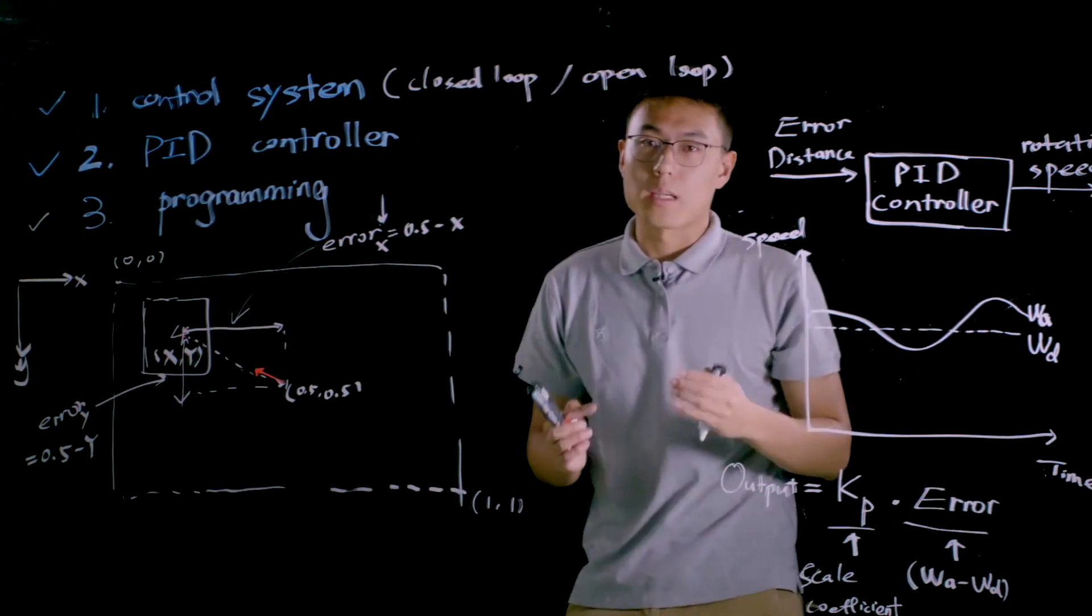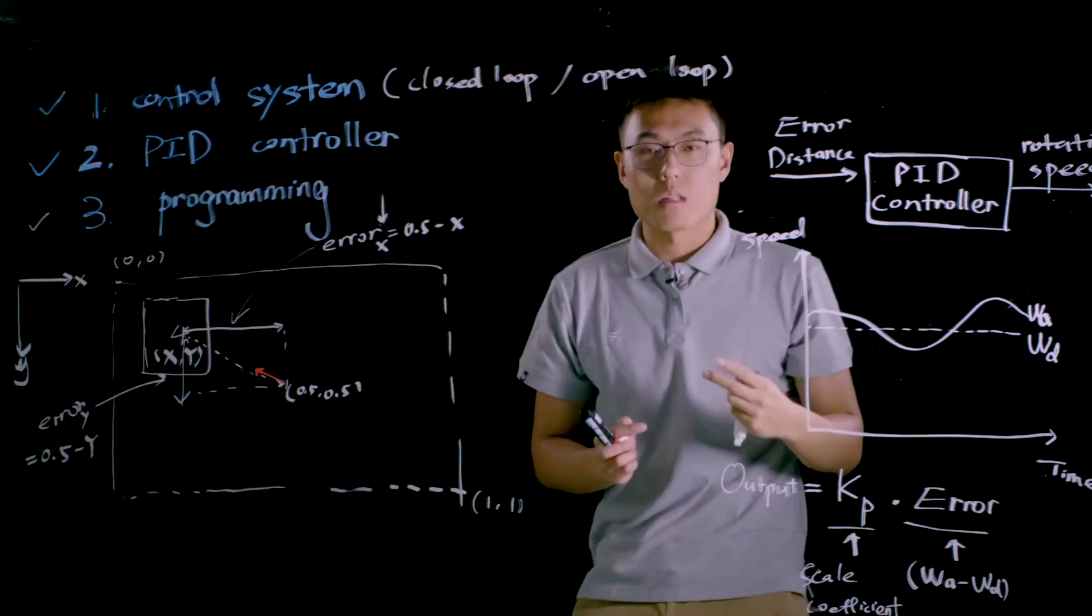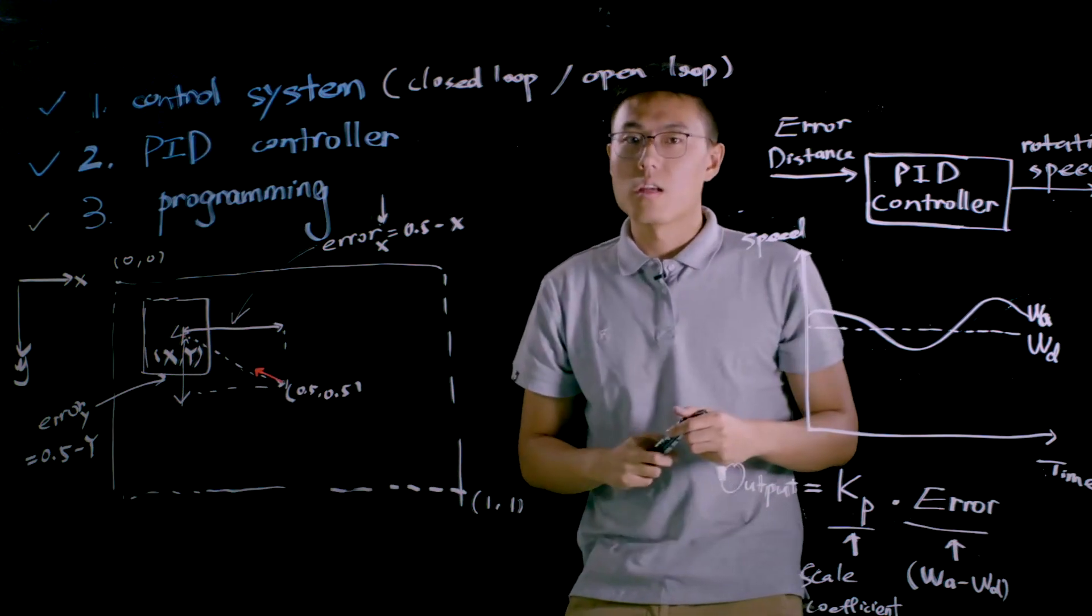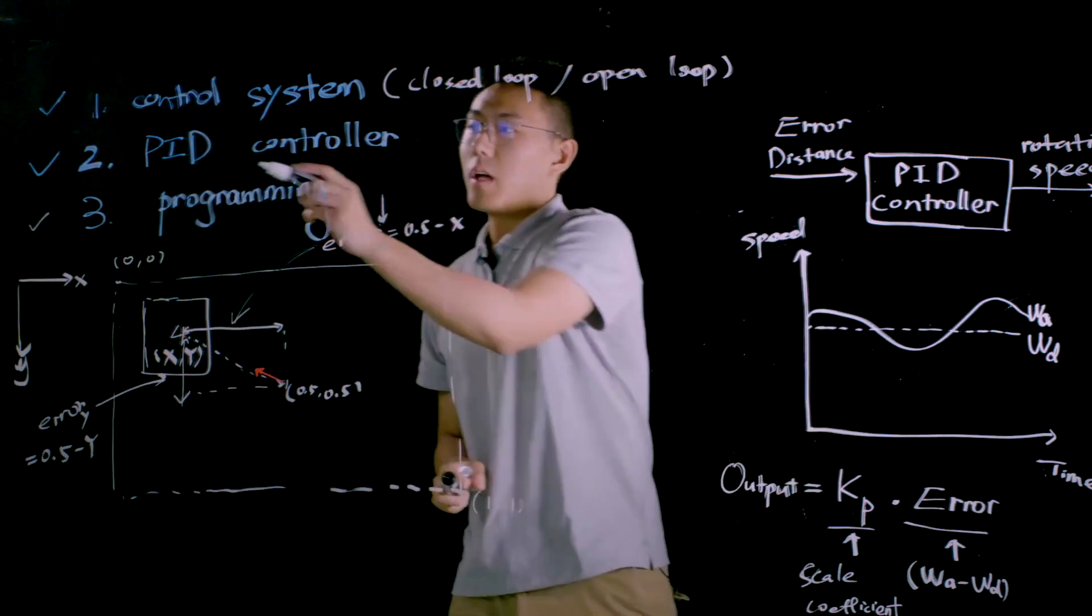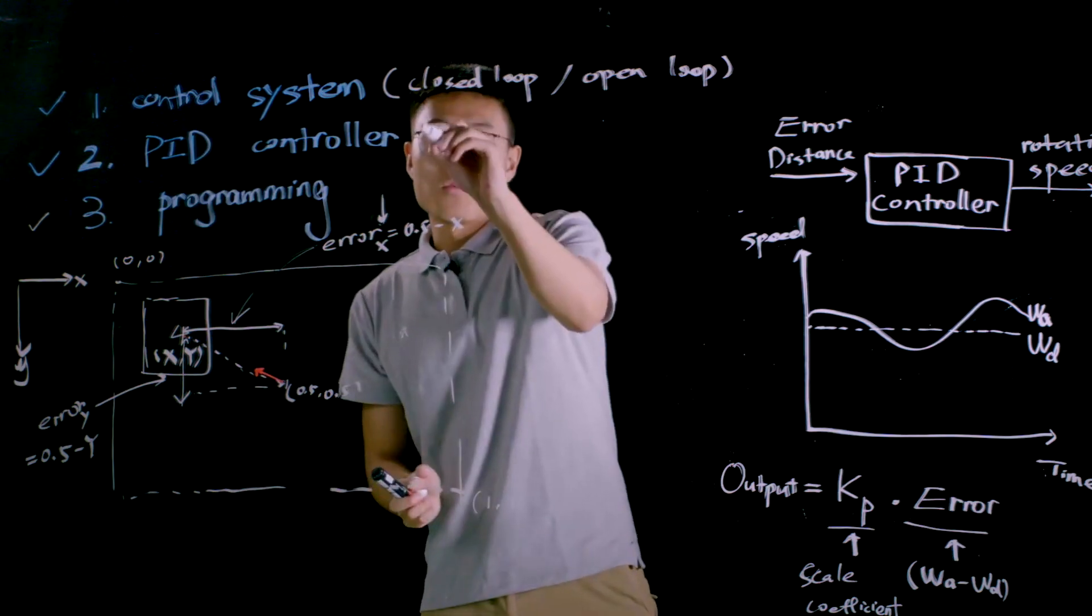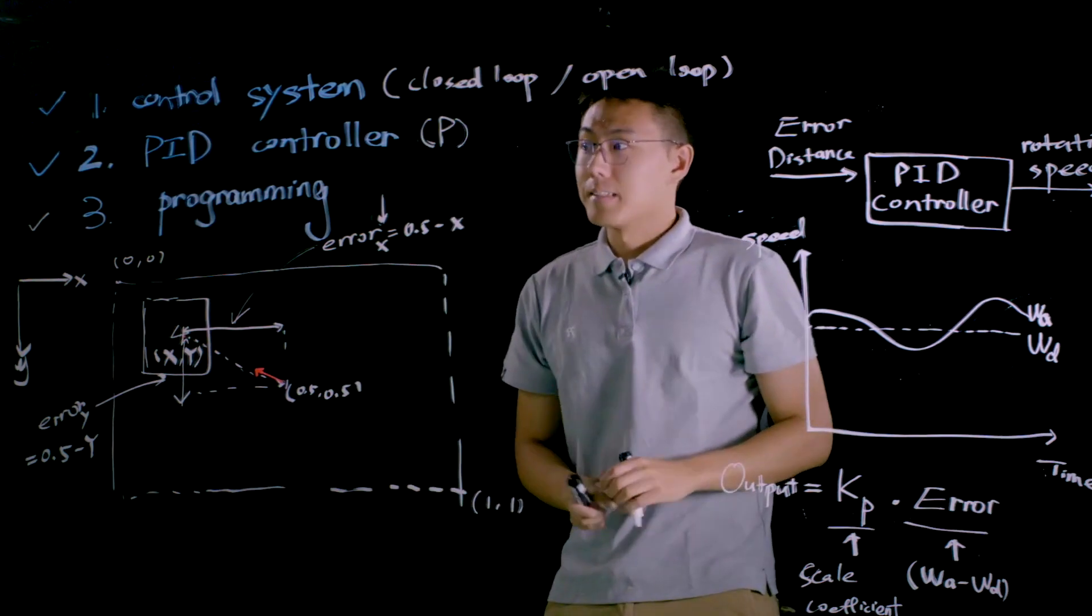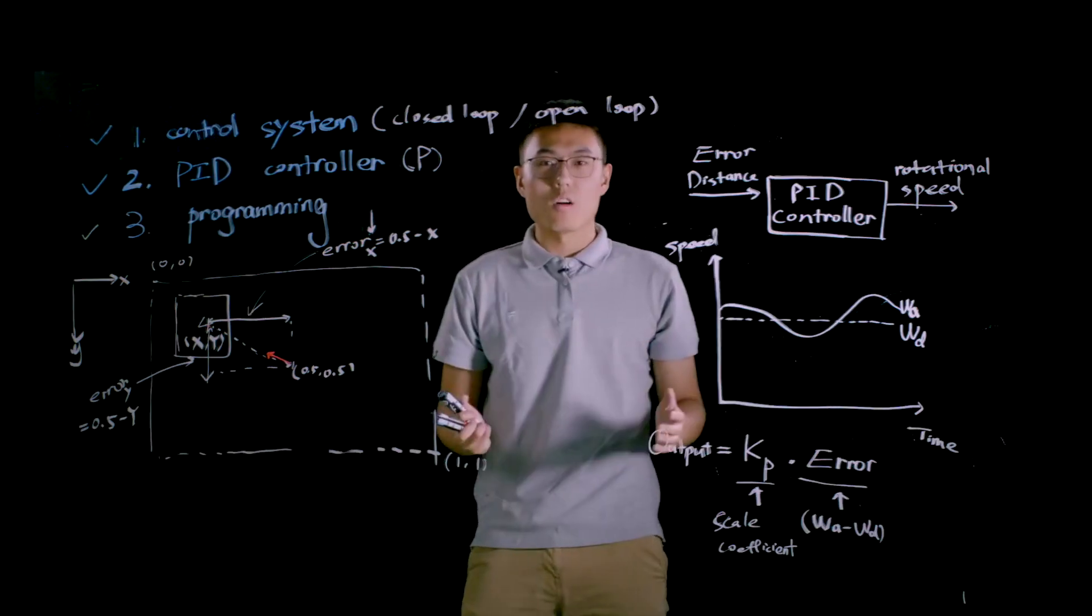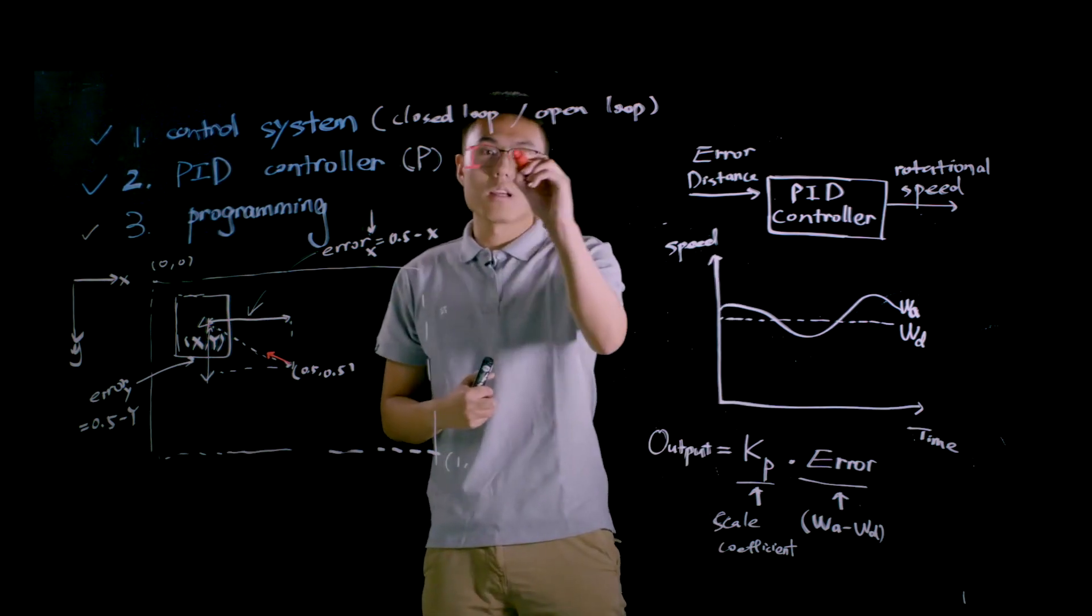Now let's do a very quick recap of today's lesson. First of all, we learned what the control system is, and we know there are two types of control systems: closed loop control system and open loop control system. Sometimes they are called feedback control system and non-feedback control system. Then we know what the PID controller is based on this project. We know how P control, or proportional control, works in this project. And in the end, we implement the PID controller in the scratch programming. This is all for today's lesson. In the next video, I'm going to show you how to implement I control and D control.